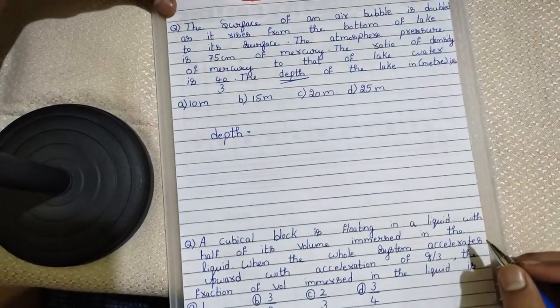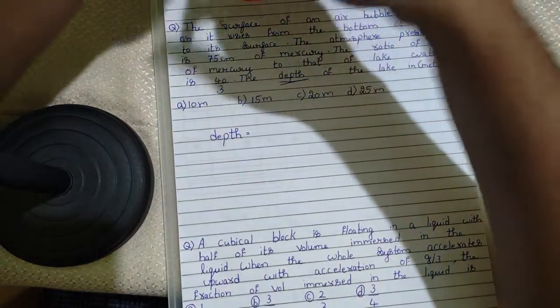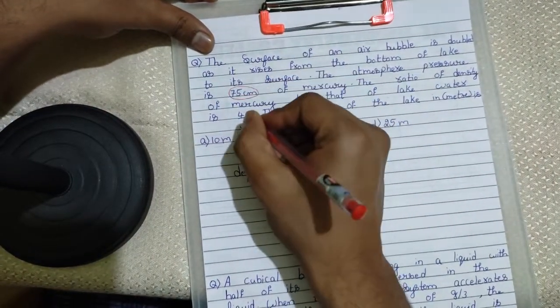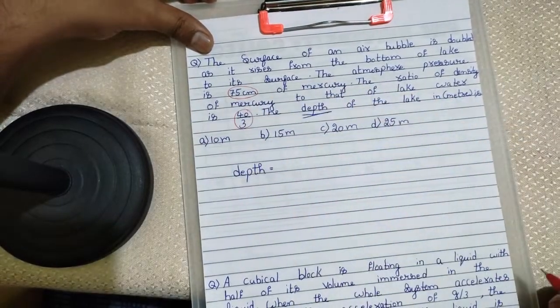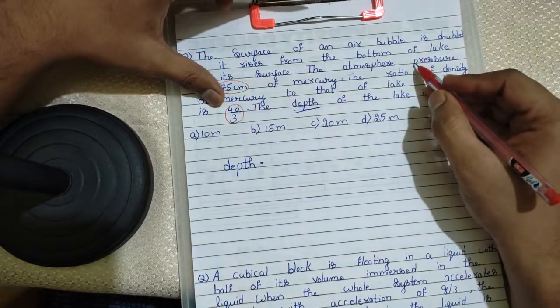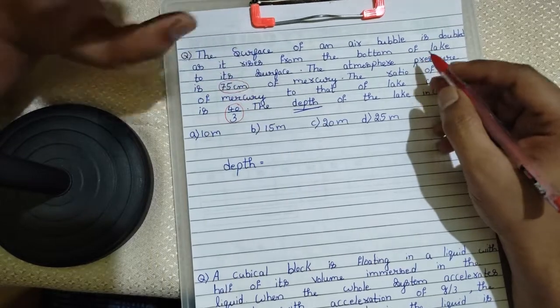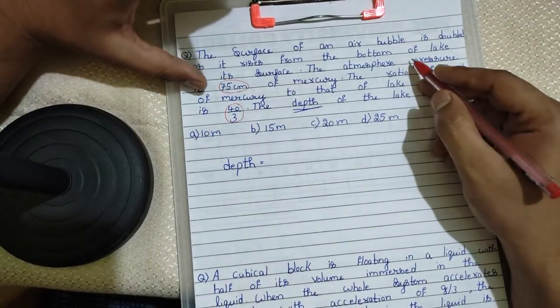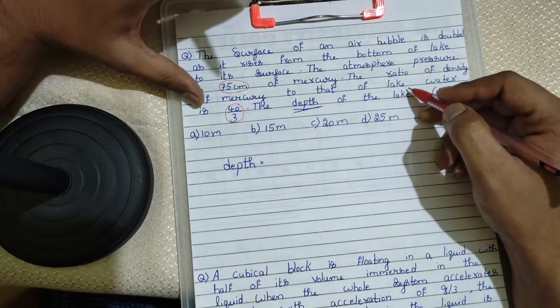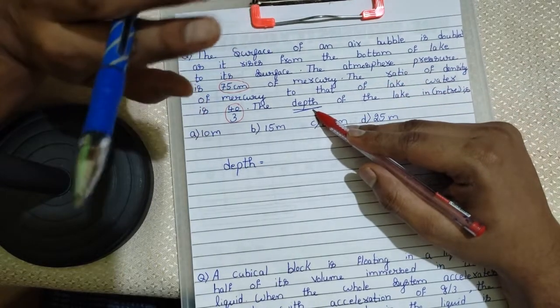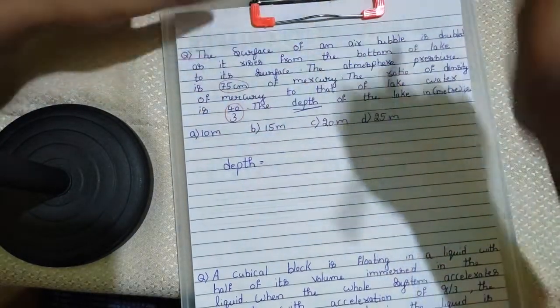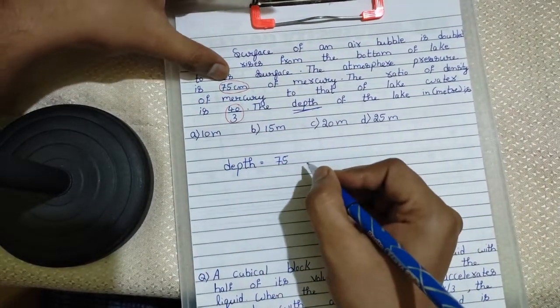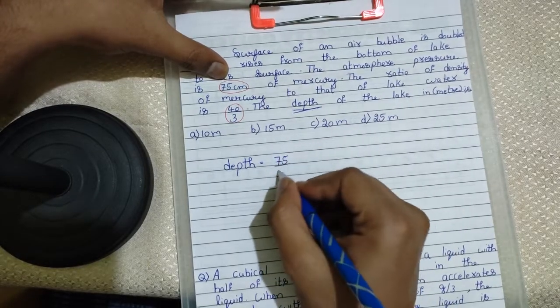Here comes a shortcut trick. What quantities they have given? Just note down the quantities: 75 cm and 40 by 3. This is density and this is atmospheric pressure. Whenever you come across this type of question, they have given atmospheric pressure and density and they are asking you to calculate depth. Just do a simple math. Write down this 75. This is in centimeter and we need in meters, so divide by 100.